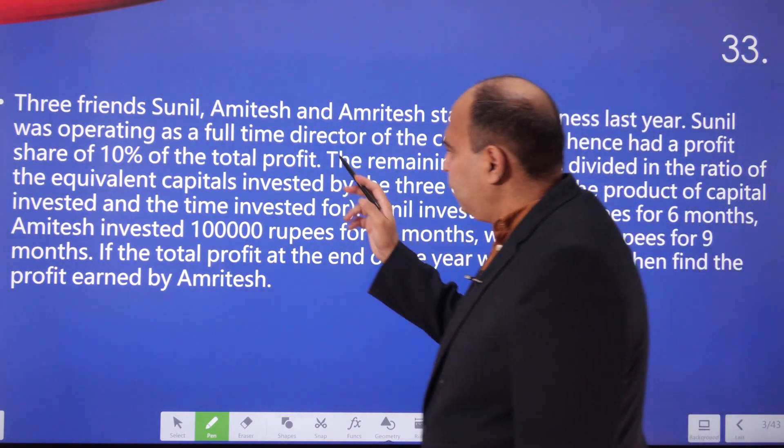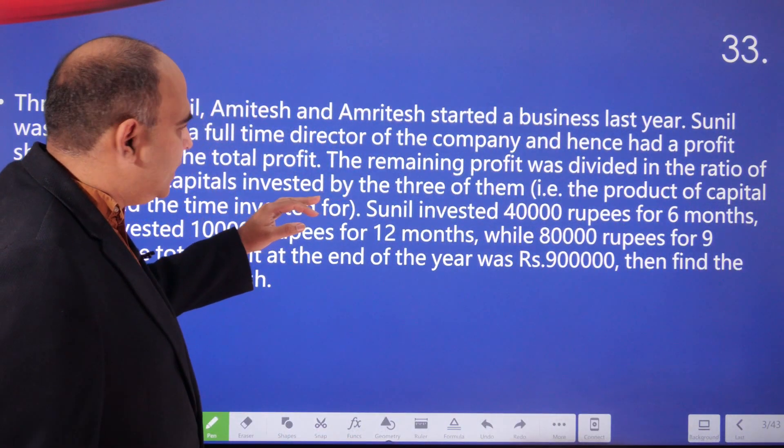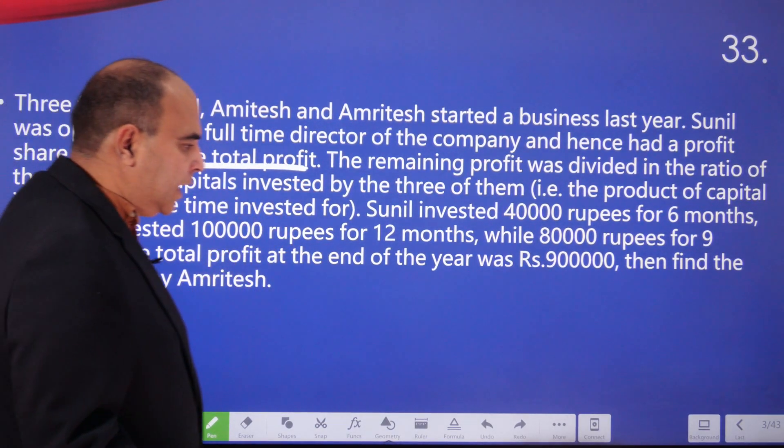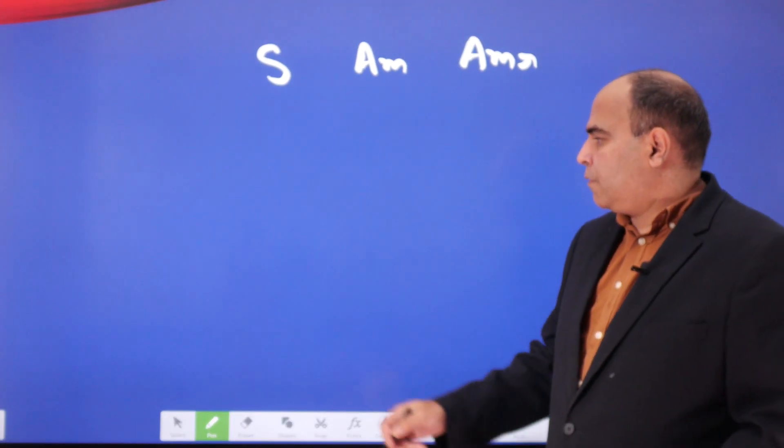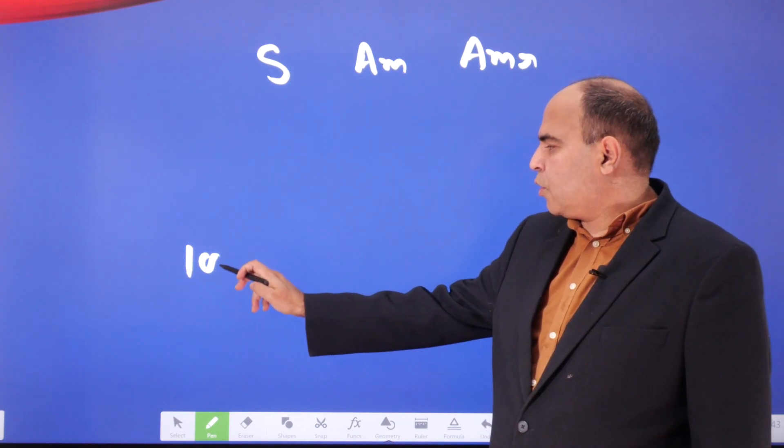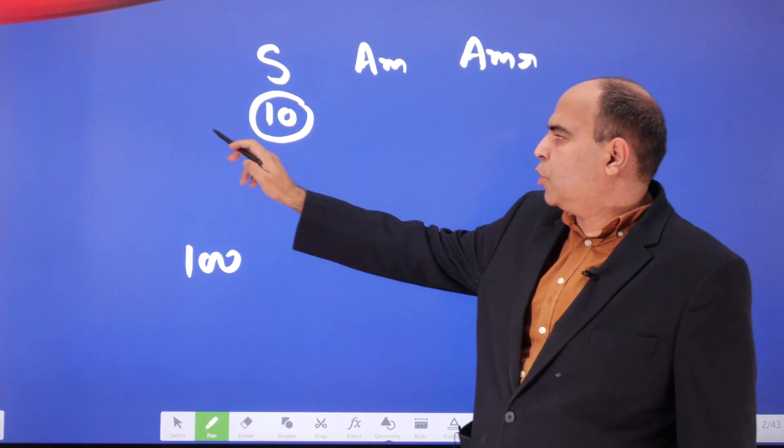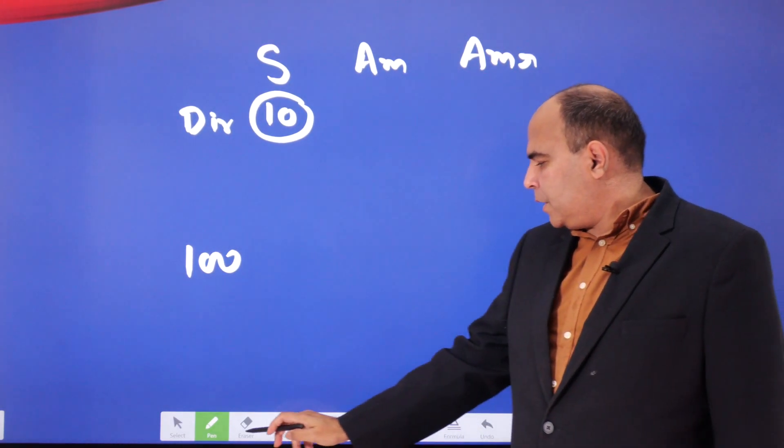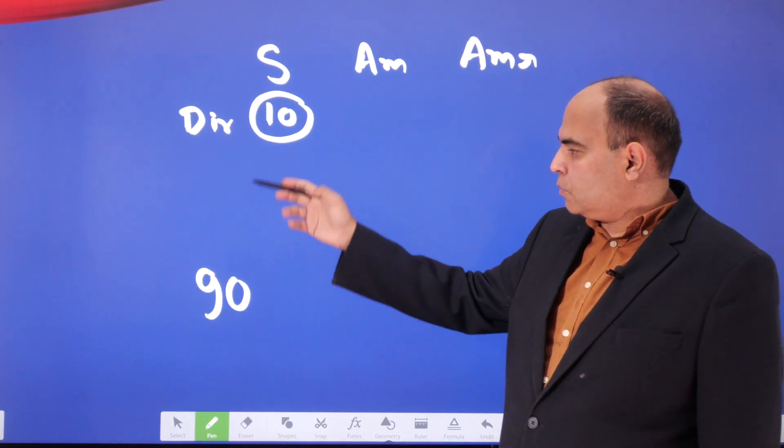Sunil was operating as a full-time director of the company and hence had a profit share of 10 percent of the total profit. So if the profit is 100 or every 100 rupees, Sunil gets 10 because he is the full-time director of the company. The other 90 is what you have to think of - where does the other 90 go?